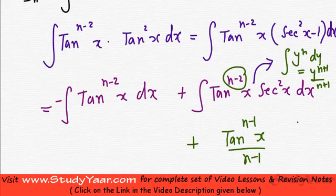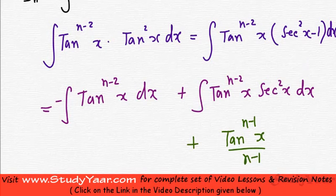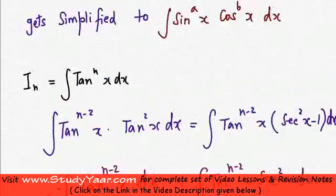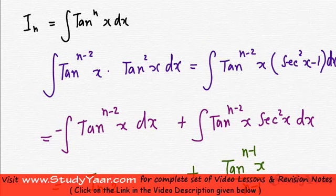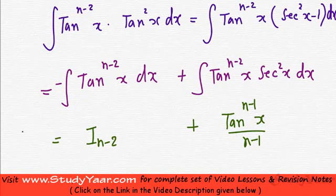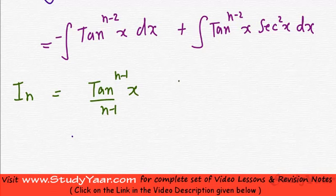Here, the exponent is n minus 2, so n minus 2 plus 1 gives n minus 1, divided by n minus 1. The remaining integral of tan^(n-2)(x) dx is simply I_(n-2). So the reduction formula is: I_n = tan^(n-1)(x)/(n-1) minus I_(n-2).